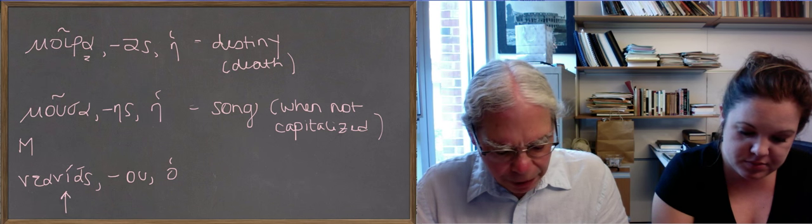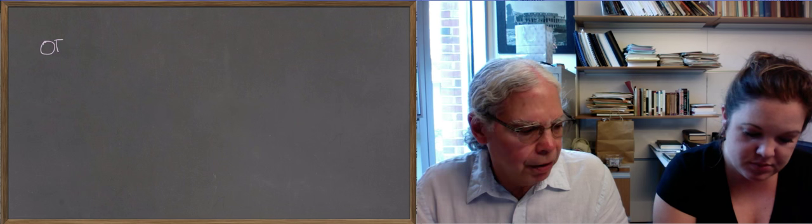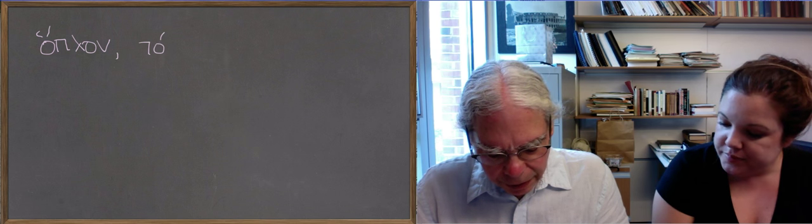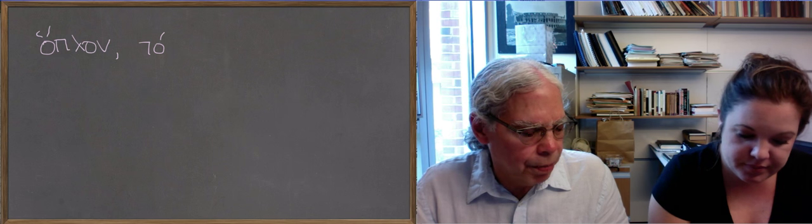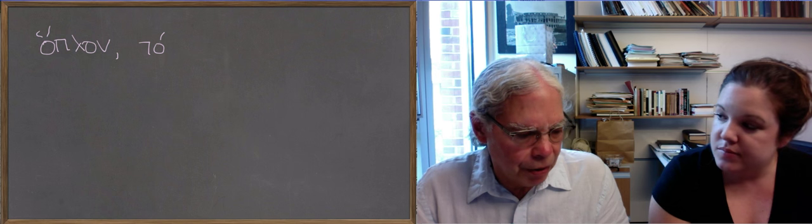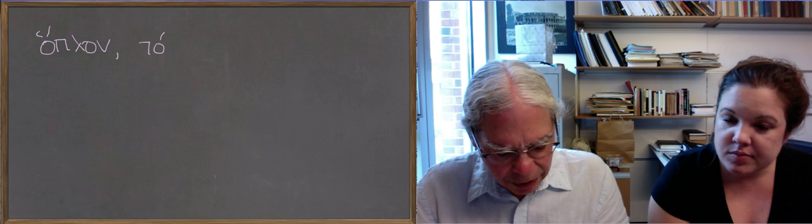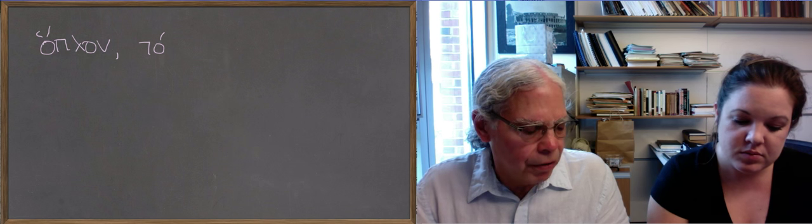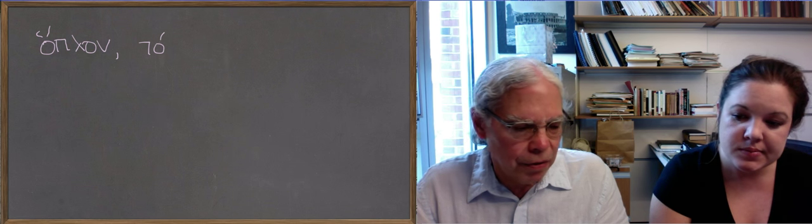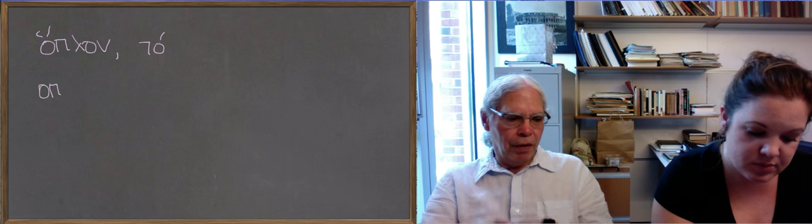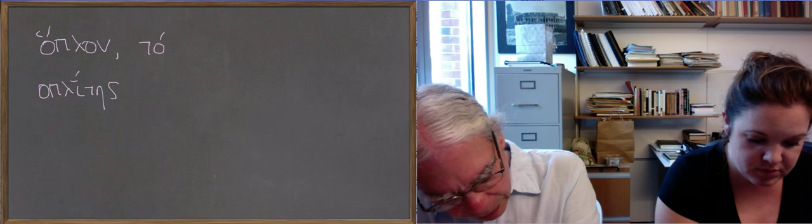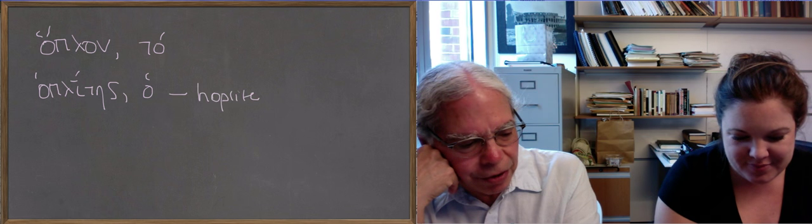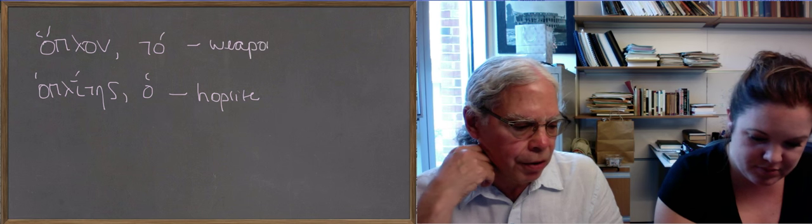Then we get the word for armor or tool, hoplon. It's a neuter noun of the second declension, like ergon. And in the plural, it means weapons. But it can mean a weapon in the singular as well. But it means, for Greece, it means this particular kind of weapon, associated with a noun that's derived from it, hoplites, which is translated in the vocabulary with the Greek word hoplite. In other words, it's a transliteration, because there's no English word for this. It means a soldier who carries a certain kind of armor.